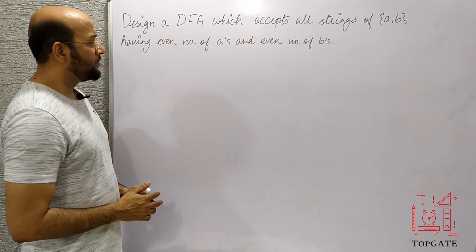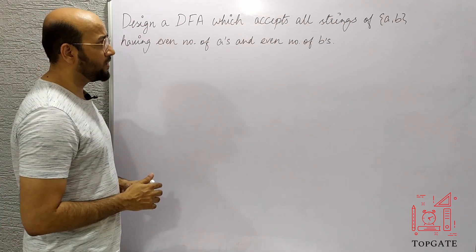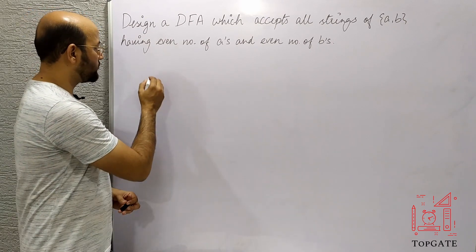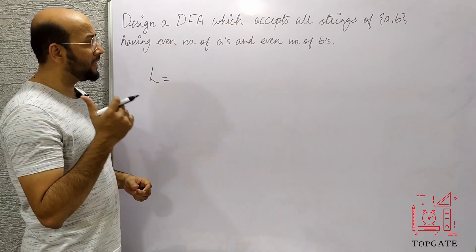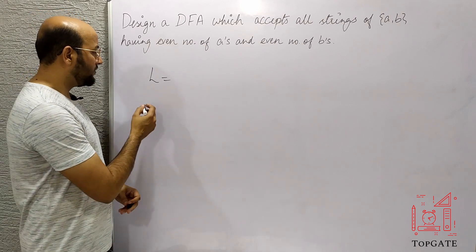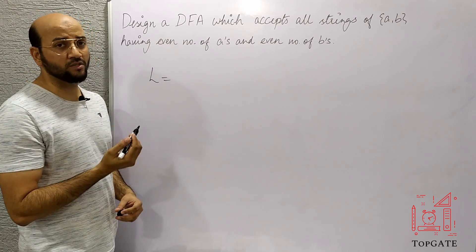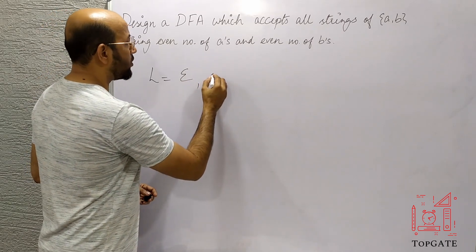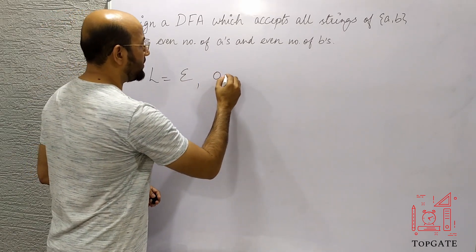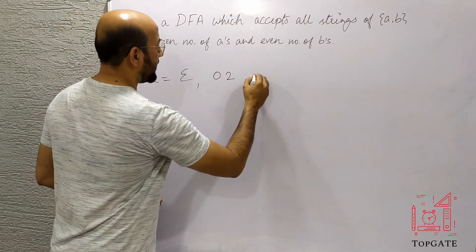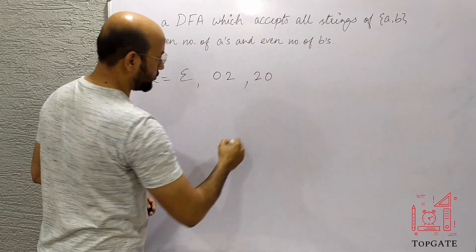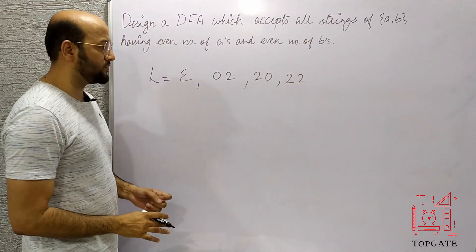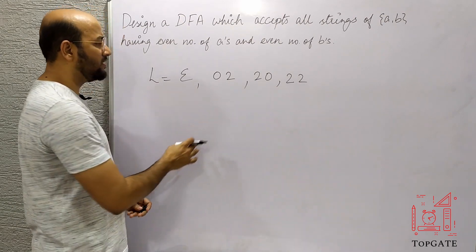First of all let's see what kind of language this is, then we will see what is the minimum string that is possible in this case, and then we'll design a DFA. The minimum string can be the empty string, since the number of A's is 0 and the number of B's is 0, and 0 is an even number. So the first thing is that we have to accept epsilon. After this, we can have number of A's as 0 and number of B's as 2, then number of A's as 2 and number of B's as 2, and several other combinations.